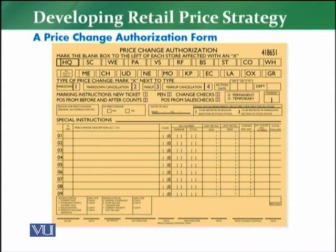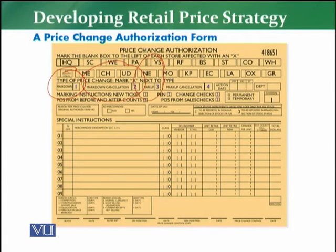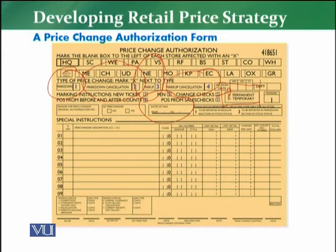Normally every retailer has their own standard format for a price change authorization form, but the components and parts are clearly specified. For example, it defines what code will be used for a markdown, what code if you want to cancel that markdown, what code if you want to apply a markup, what code for an employee discount, whether the change is permanent or temporary — and if temporary, from which date to which date, and for which specific customer or time period.